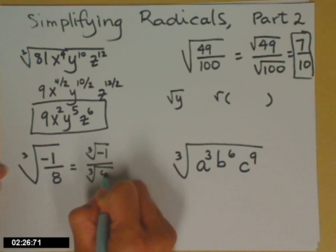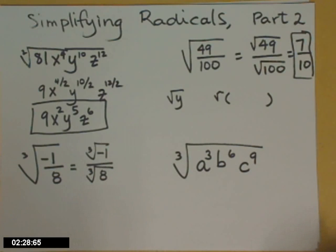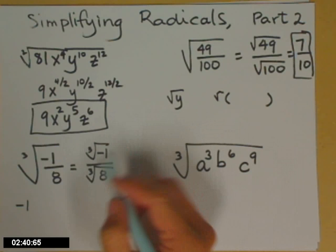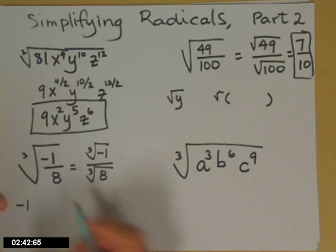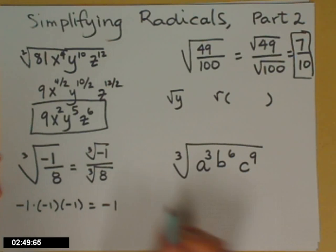So now on the top, I'm looking at what times what times what equals negative one. So if you remember your rules about multiplying and dividing negative numbers, if you multiply negative one times negative one times negative one, you do in fact get negative one. And then the cubed root of eight, I need something times something times something to get eight, and so that's going to be a two.